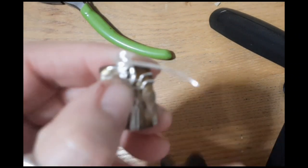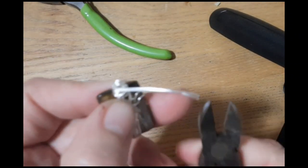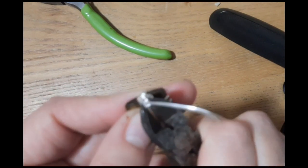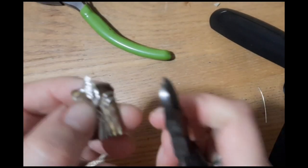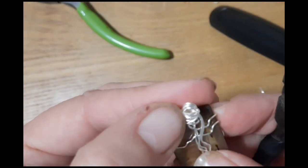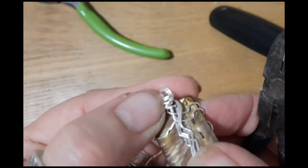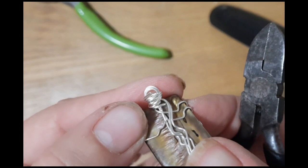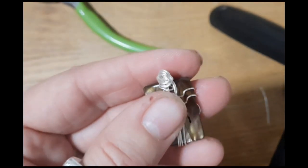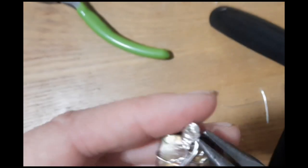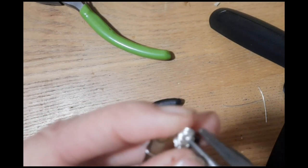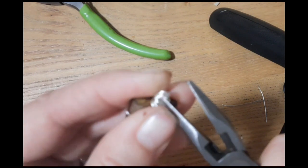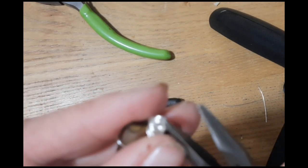You can snip it off halfway across the face. Make sure it's halfway. And then you can push the ends inside the face with your flat nose pliers.